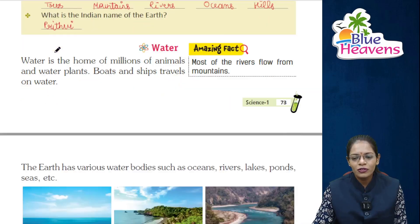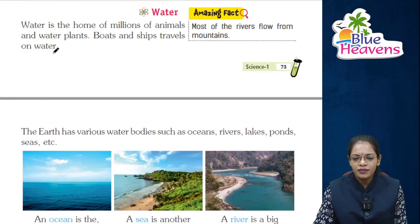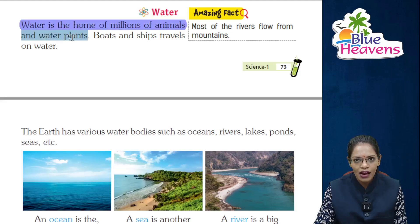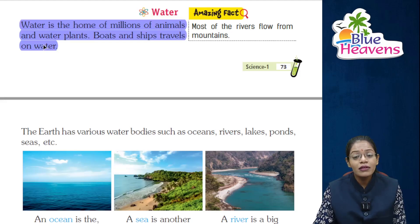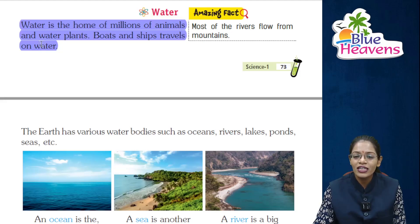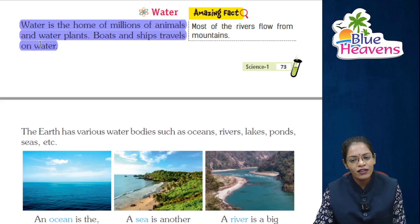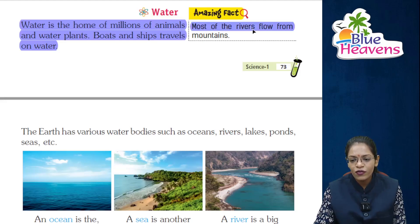Water is the home of millions of animals and water plants. Boats and ships also travel on water. Most of the rivers flow from mountains.